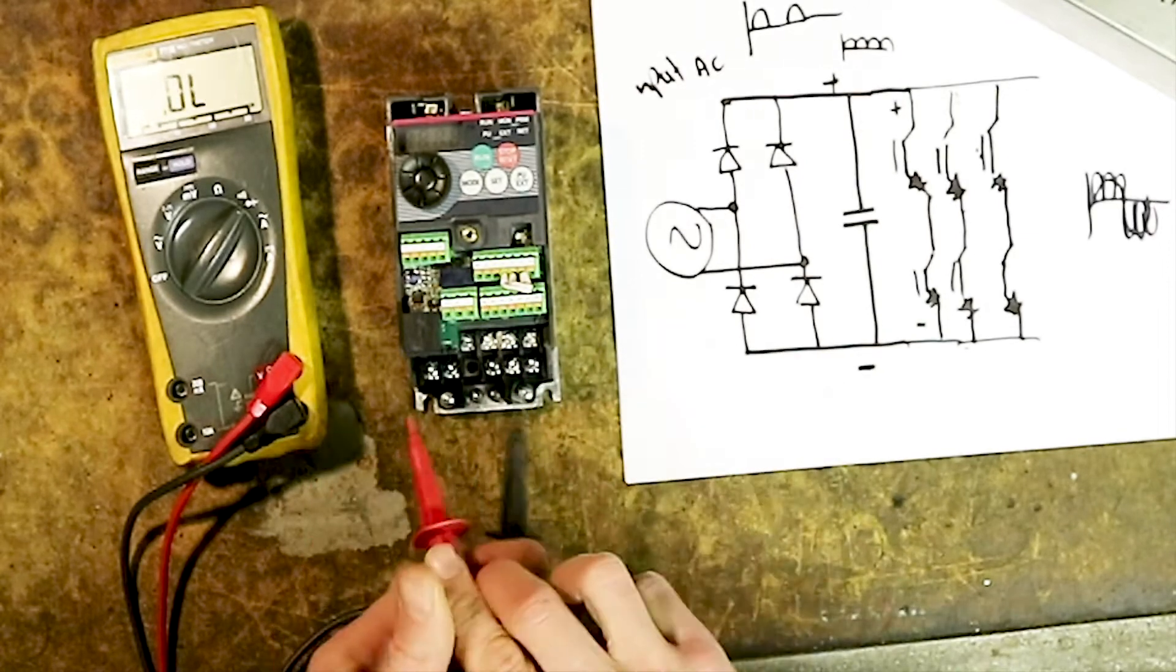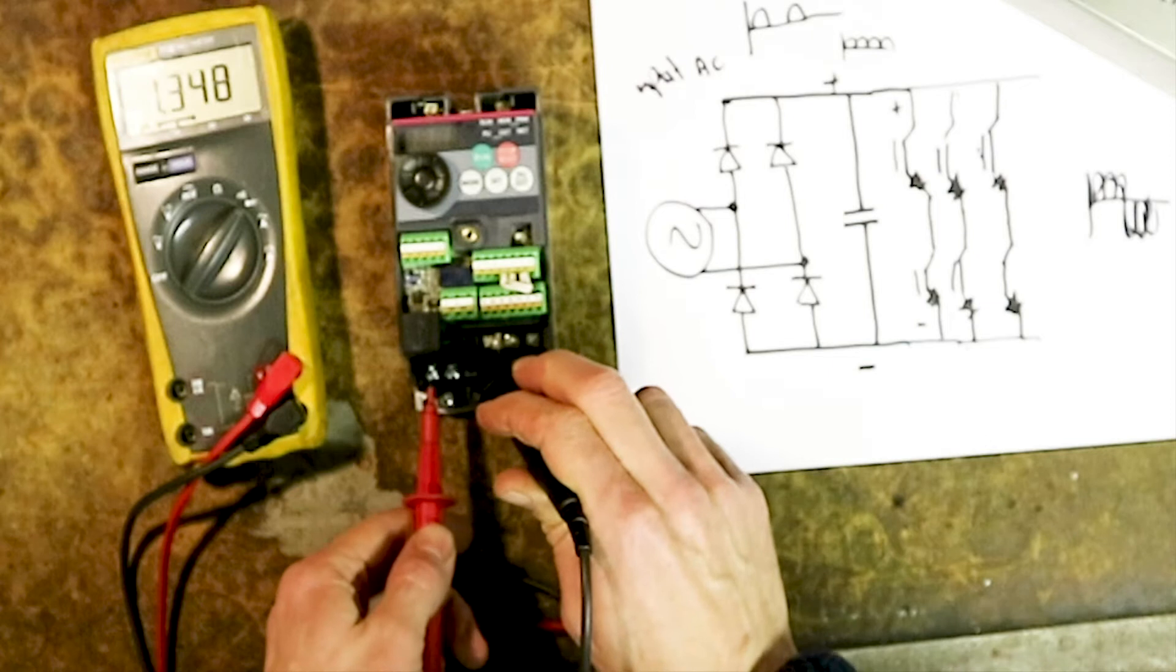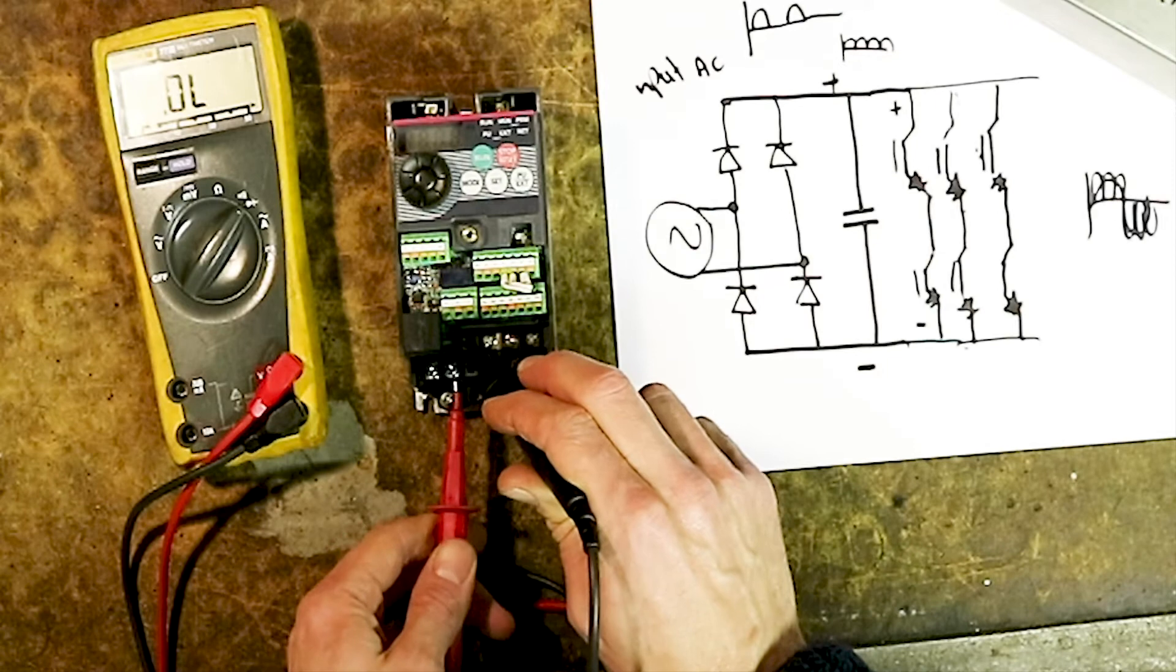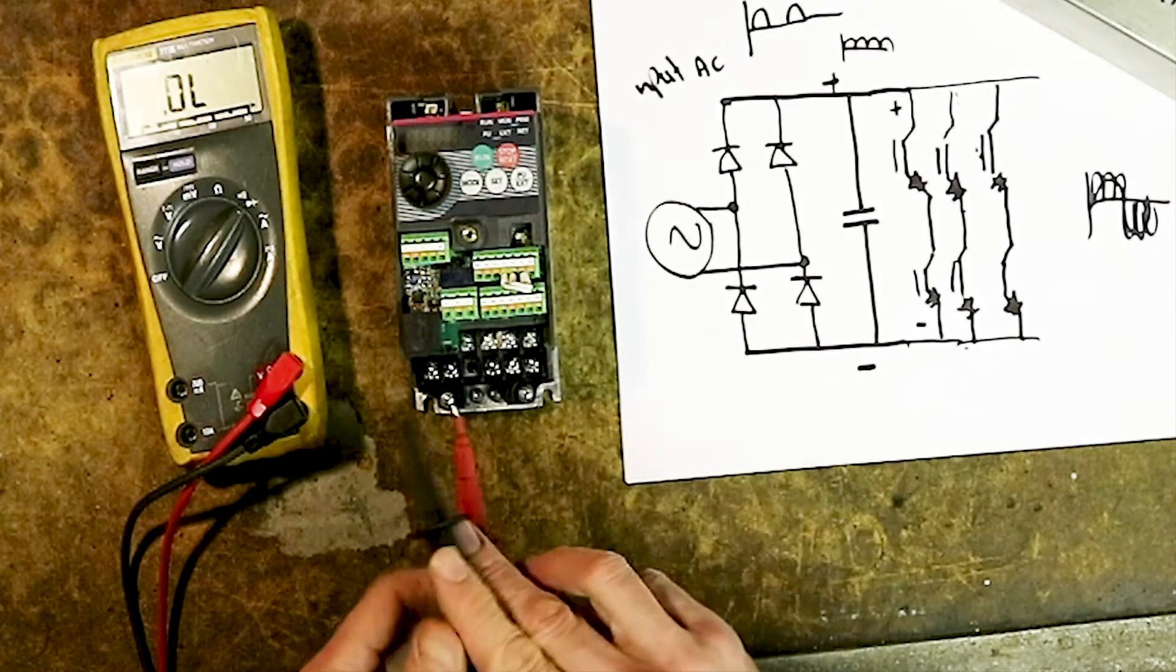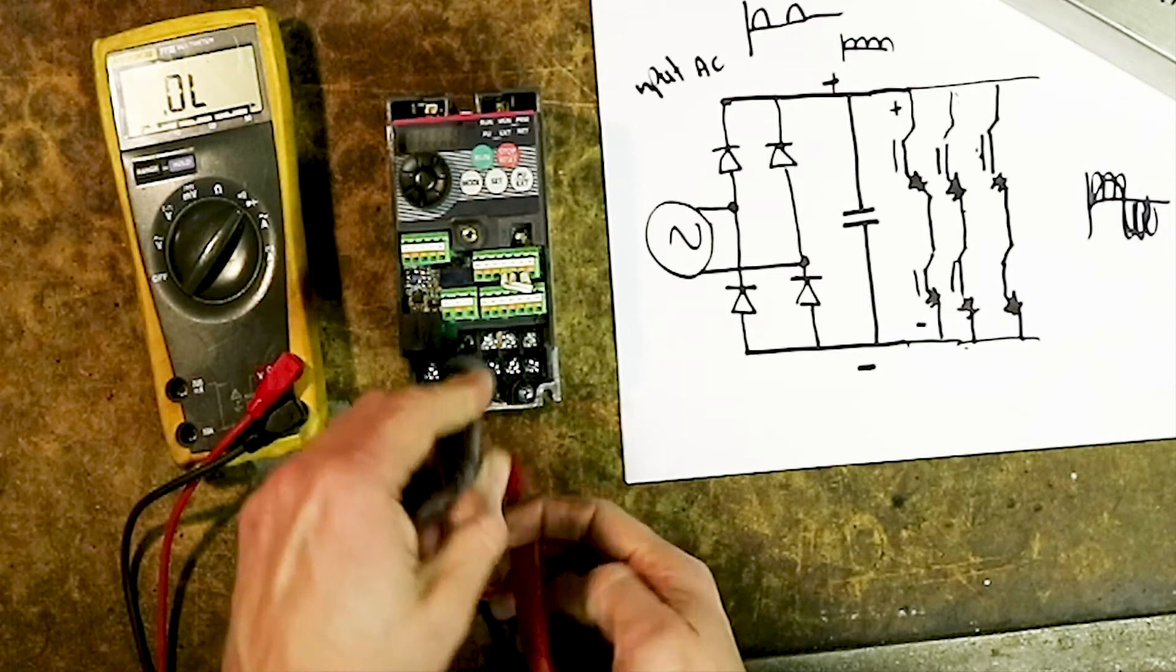And then if it's okay we shouldn't have a reading on the other side. There we go, there's nothing there, so the input side is okay. Now we're going to go to the output side.